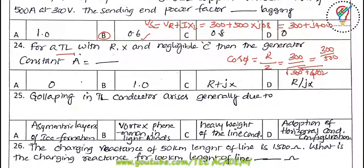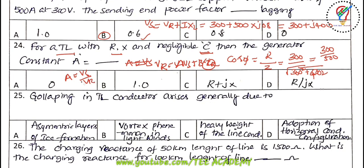Twenty-fourth question: for a transmission line with resistance R, reactance X, and negligible capacitance C, the generalized constant A — from the relation Vr = A·Vs + B·Ir, if Ir = 0 then A = Vs/Vr. For a transmission line it is approximately equal to 1. So the answer is 1.